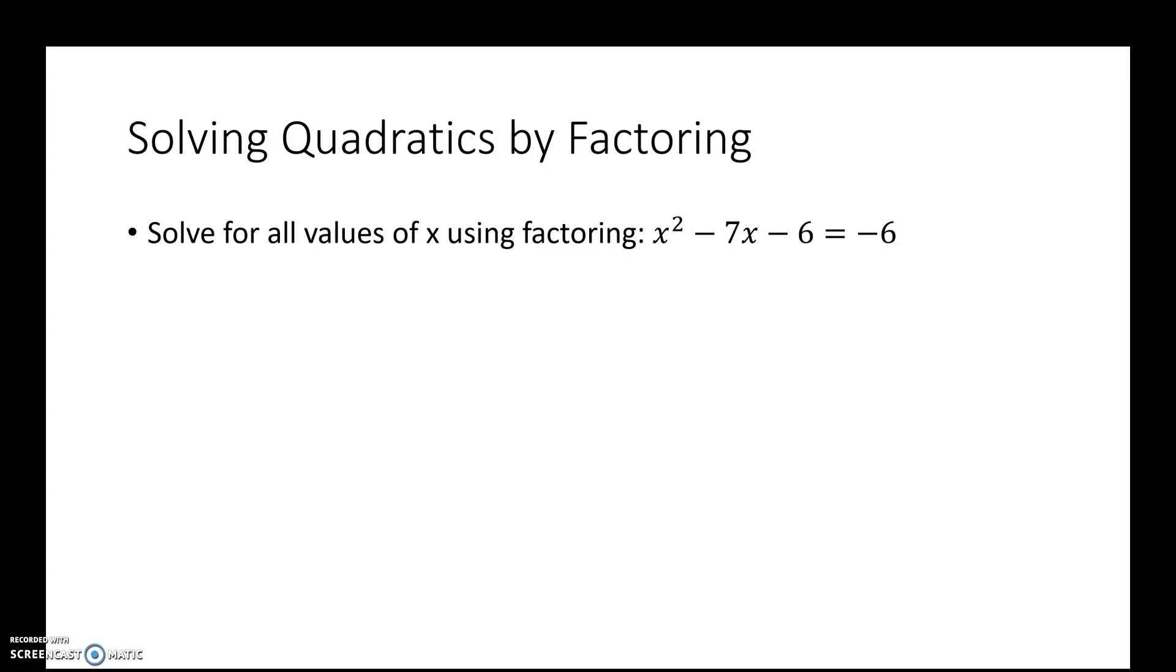Solving quadratics by factoring. Okay, when we solve, we find all values of x. Solve for x. So that means I can't plug in for x. I have to get x alone. How do I do that? I have to make sure that my equation is always equal to 0. So when I look at this one, to get this equal to 0, I'm going to add 6 to both sides. So I'm going to move everything towards my squared term. So I have x squared minus 7x. These happen to cancel. That's fine.